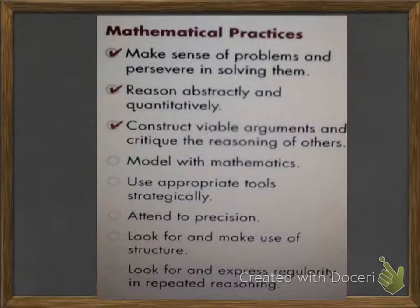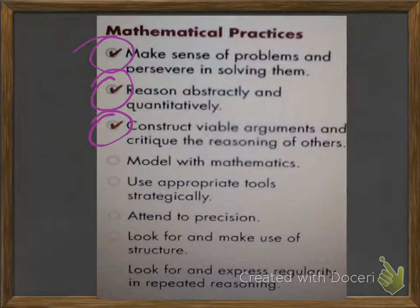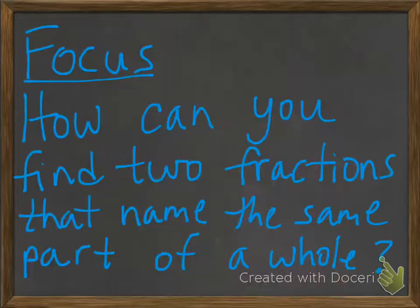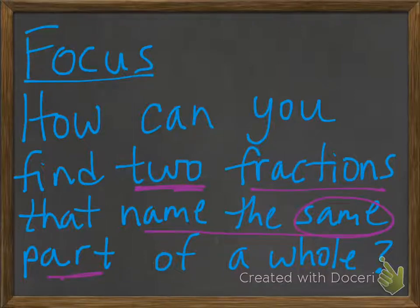Our mathematical practices are: making sense of problems and persevering in solving them, reasoning abstractly and quantitatively, and constructing viable arguments and critiquing the reasoning of others. Our focus is: how can you find two fractions that name the same part of a whole? We're going for the same part of a whole, but with two different fractions.